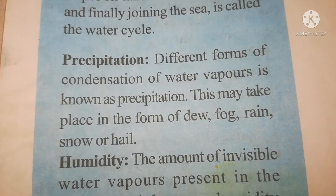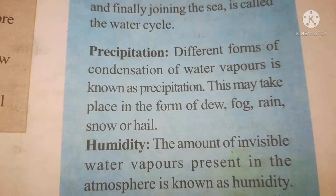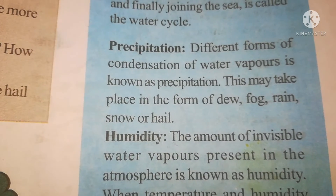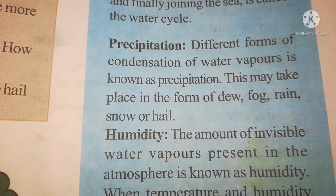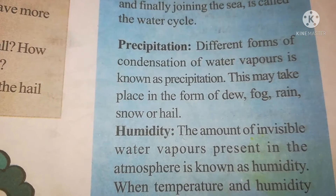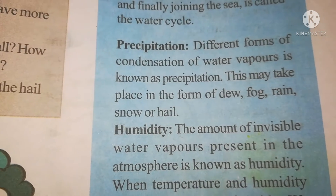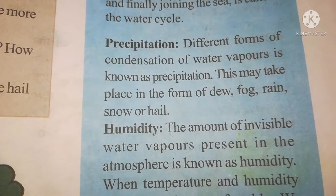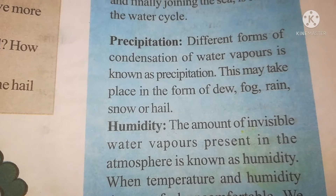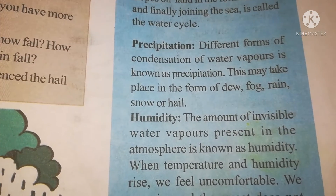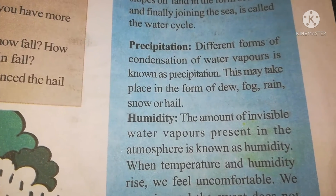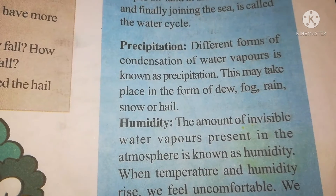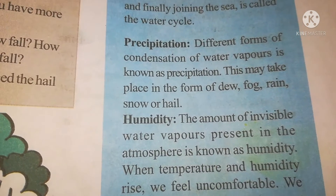Precipitation. So students, do you know what is precipitation? Precipitation means different forms of condensation of water vapors is known as precipitation. Different forms of condensation — what do you mean by condensation? Water which collects as droplets on a cold surface when humid air is in contact with it. The conversion of a vapor or gas to a liquid is called condensation. So different forms of water droplets of water vapors is known as precipitation. These may take place in the form of dew, fog, rain, snow, or hail.